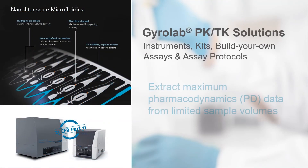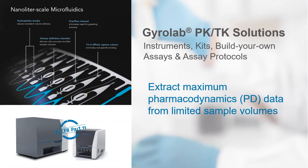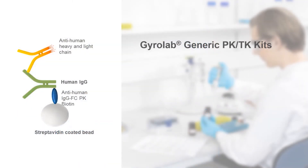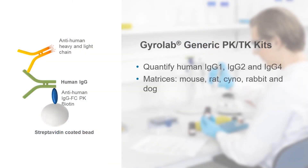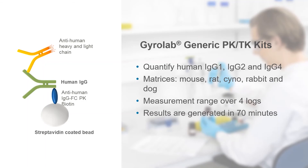Gyrolab microfluidic nanoliter scale immunoassay solutions for PK and TK analysis save time and extract the maximum pharmacodynamic data from limited sample volumes. The Gyrolab software is designed for 21 CFR Part 11 compliance and is compatible with regulated environments. Gyrolab generic PK kits are optimized for Gyrolab platforms and are utilized for pharmacokinetic and toxicokinetic immunoassays in early stage throughout preclinical development of intact recombinant human antibodies.